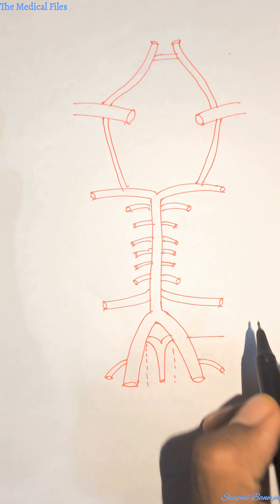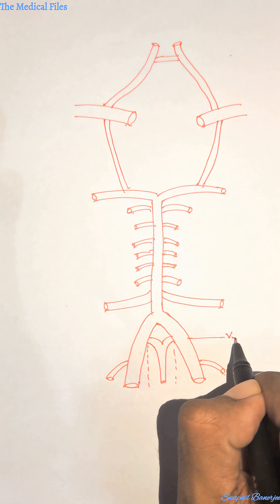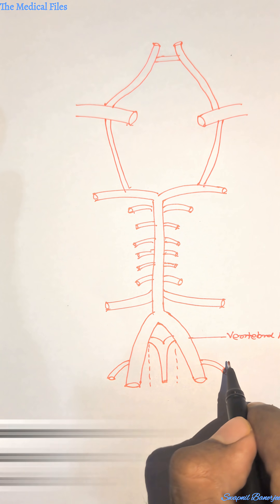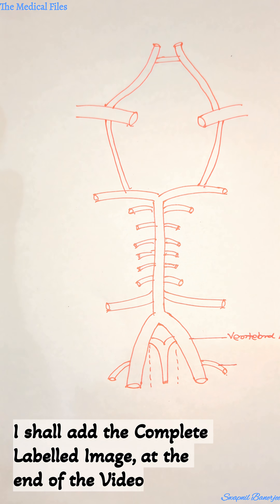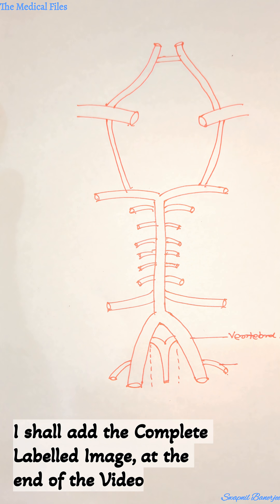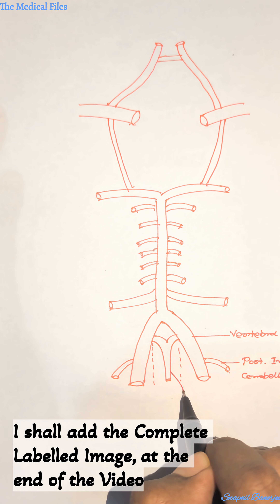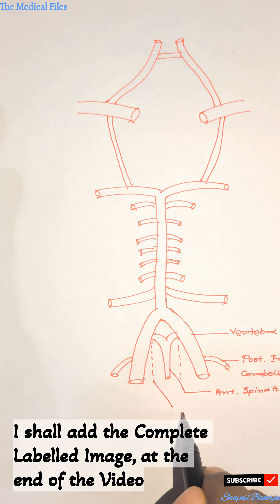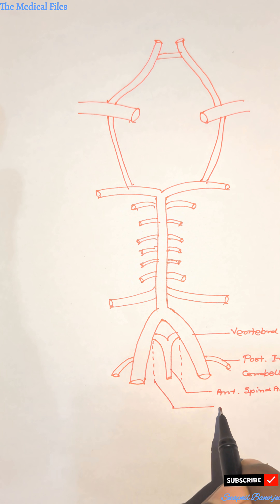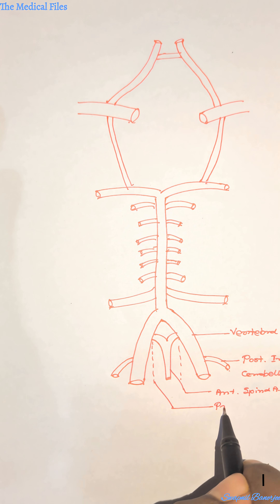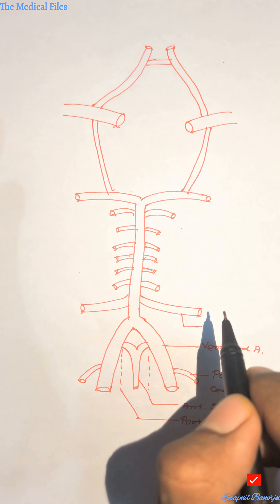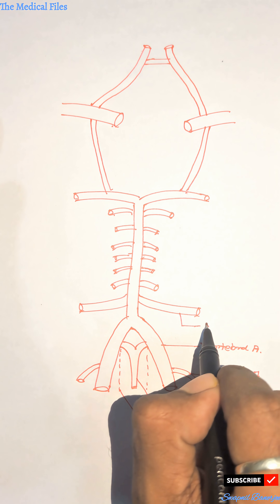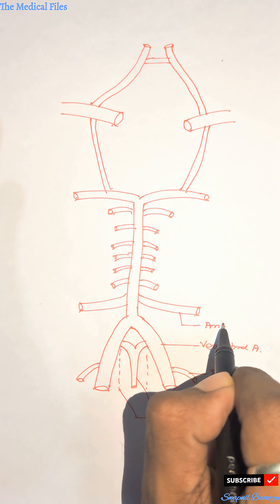So now we shall label the diagram. This one is the vertebral artery, this one is the posterior inferior cerebellar artery, this one is the anterior spinal artery, this one is the posterior spinal artery, and this one is the anterior inferior cerebellar artery.